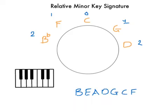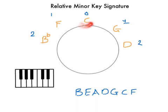This is a relative minor key signature. If you don't know what this picture is here, then you need to go back and do major key signatures. So to get to the relative minor, you take a major key signature like C major, and you go down three semitones.